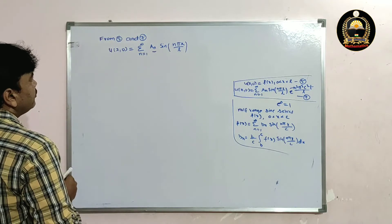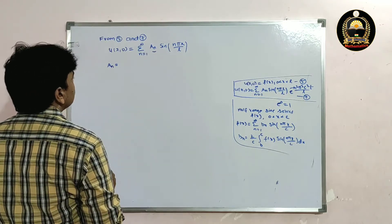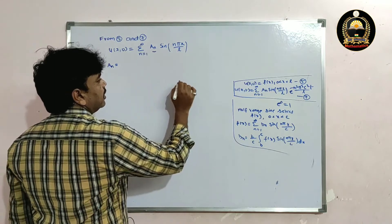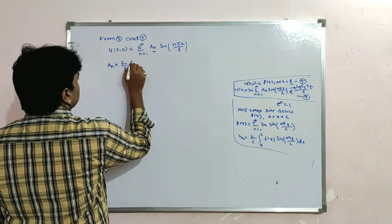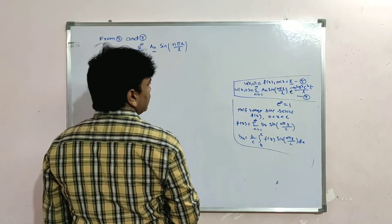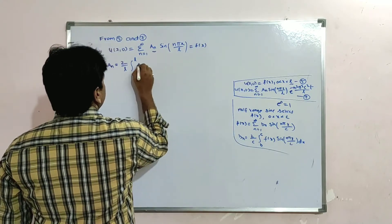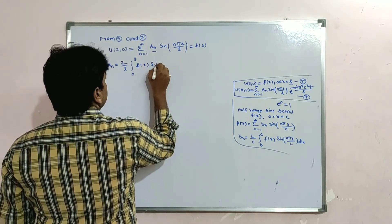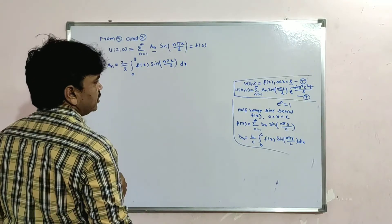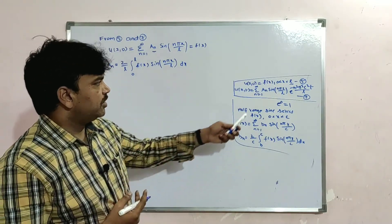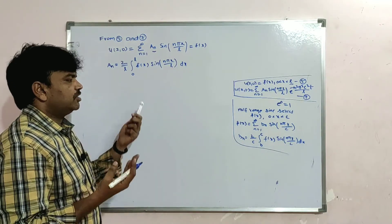So Aₙ = (2/L) ∫₀ᴸ f(x) sin(nπx/L) dx. Here the length is L. We don't know f(x) explicitly — it is just given as f(x). If f(x) were given as a specific function like x or x², we could evaluate the integration. Otherwise, we leave it as is.